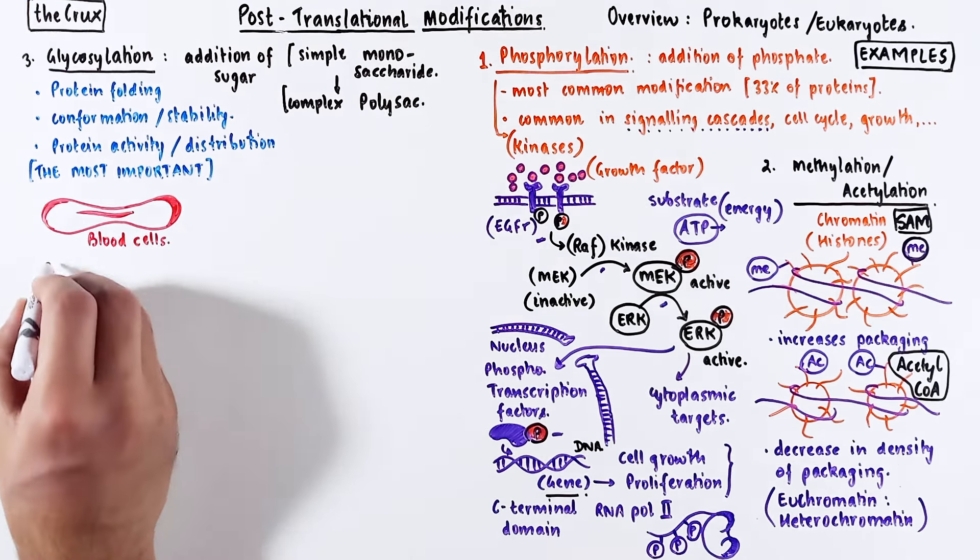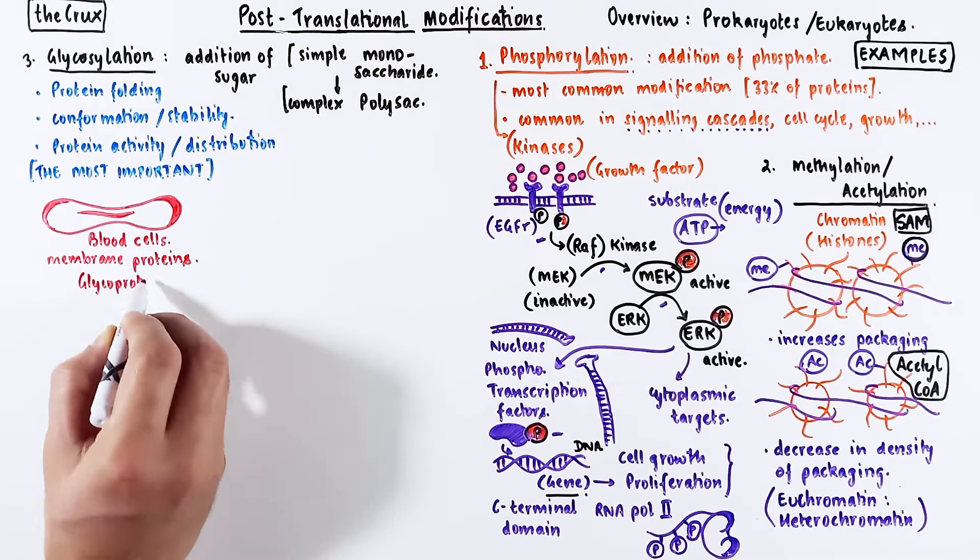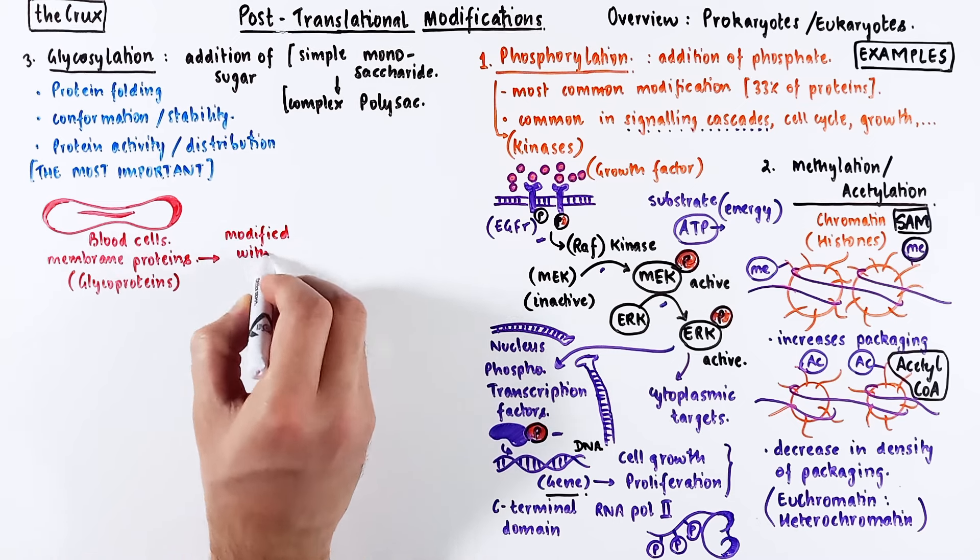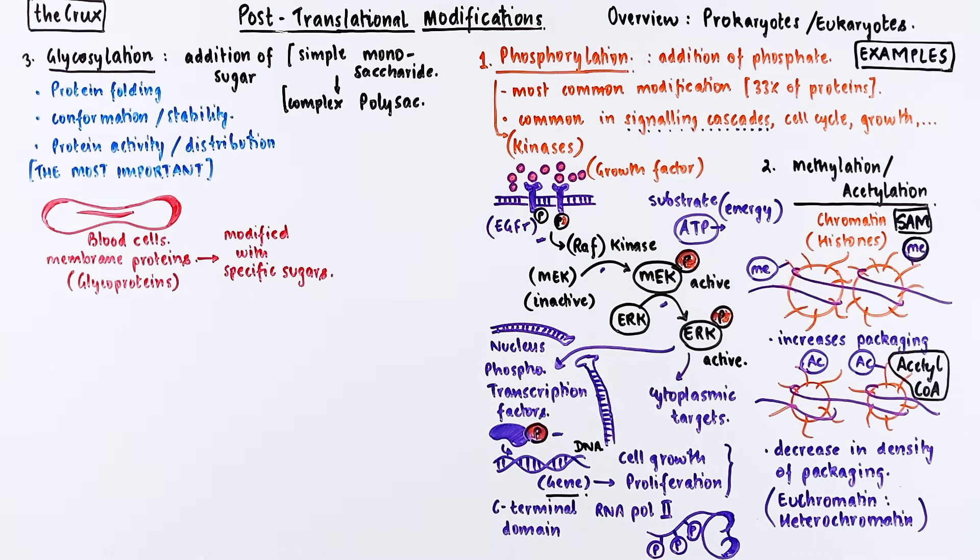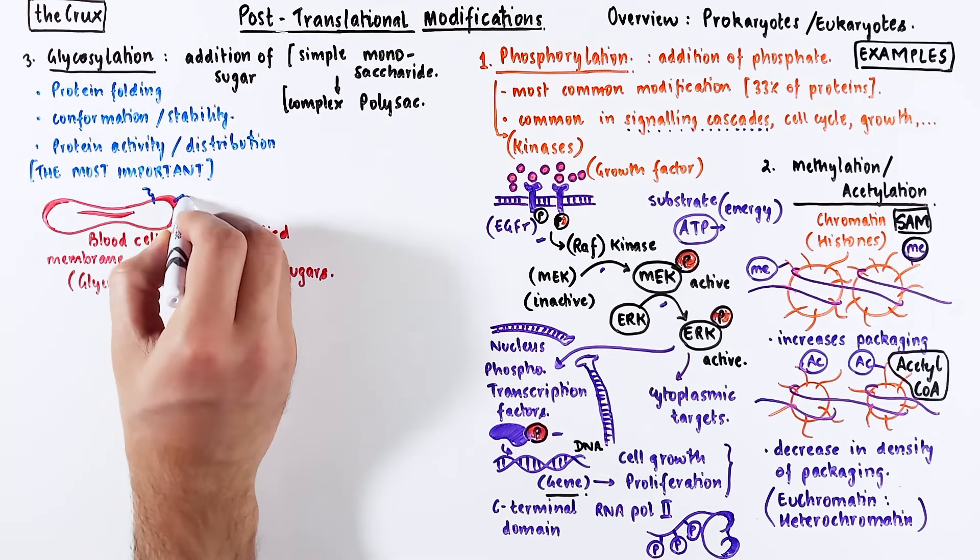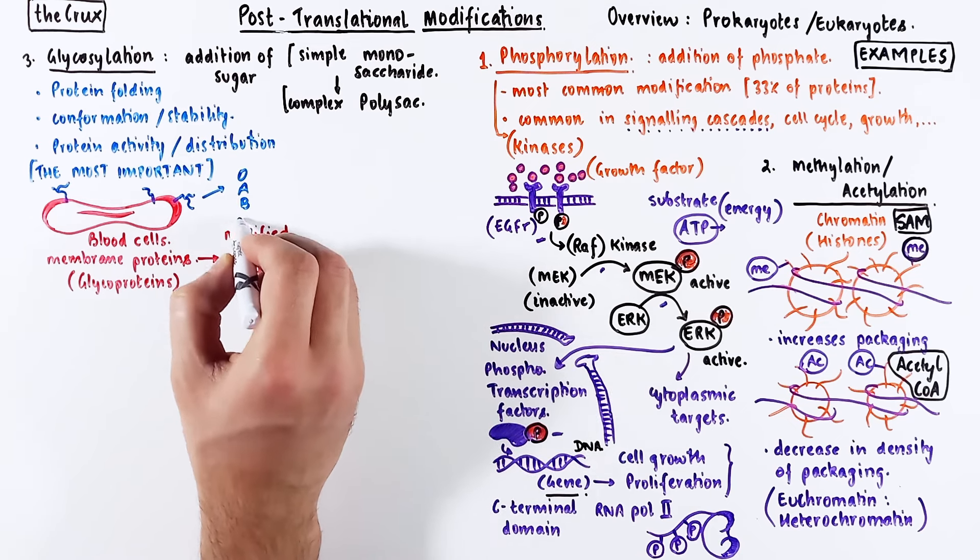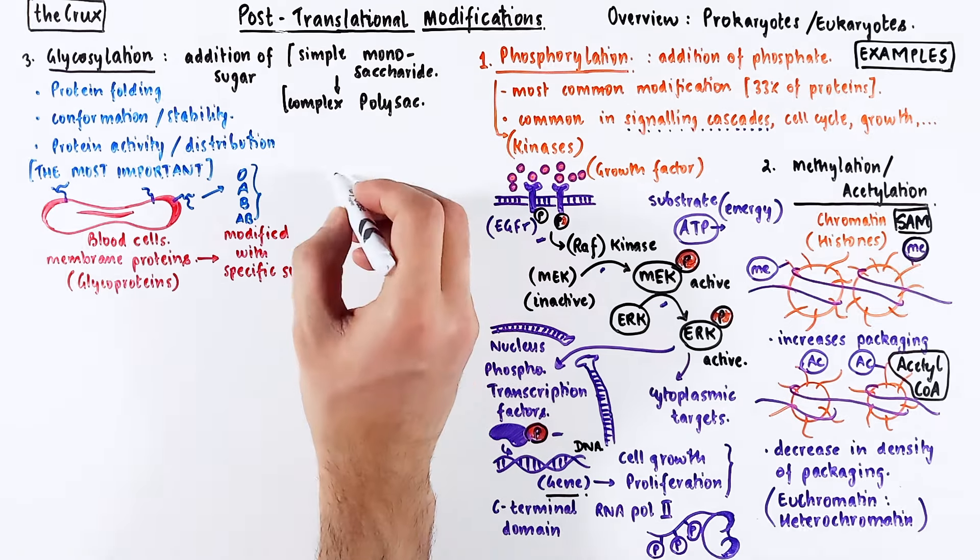Let's look at an example. In blood cells, you have membrane proteins called glycoproteins which have sugars attached to them. Oftentimes these sugars are very specifically attached depending on the genes present in a person. This specific form of sugar determines the ABO blood group of a person. That's a very common example of glycosylation.